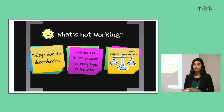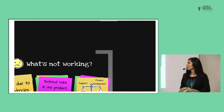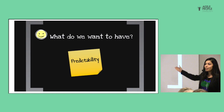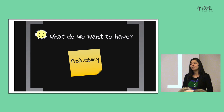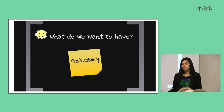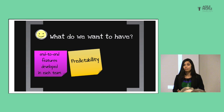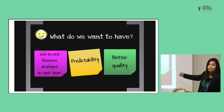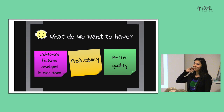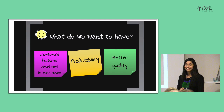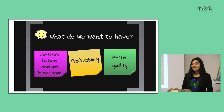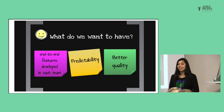Creating the balance between supporting customers and evolving the product was very difficult. Now I see a lot of heads nodding — some of these problems are probably familiar. What did we want in the product? Predictability, end-to-end features developed in each team so dependencies wouldn't slow us down, and better quality in both products. We weren't creating new tests for our continuous integration, yet we claimed to have continuous delivery — we were actually delivering several times a day, but the code was not of good quality, meaning more bugs, more customer complaints, even more unhappy customers.